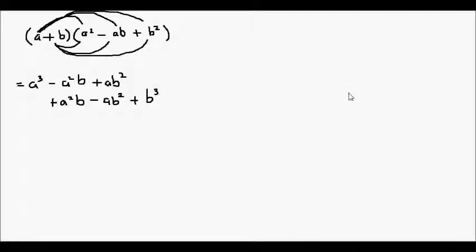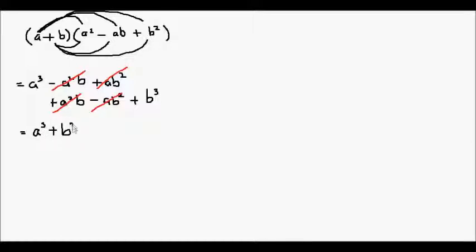So let's simplify. Our negative a squared b will cancel out with our positive a squared b. And our positive ab squared will cancel out with our negative ab squared. And what we're left with is a cubed plus b cubed.